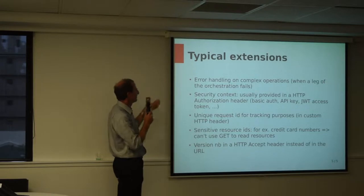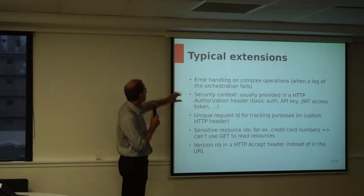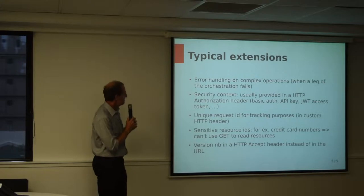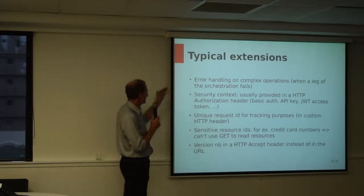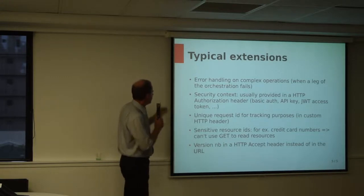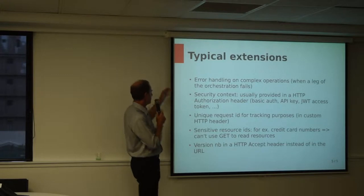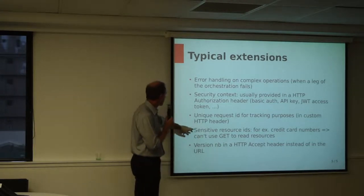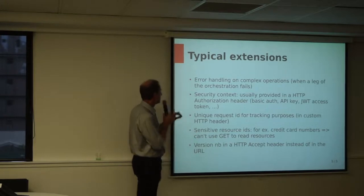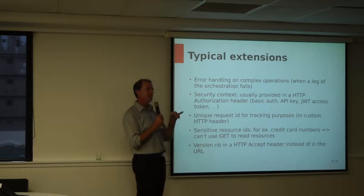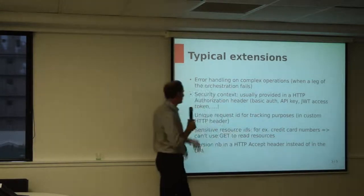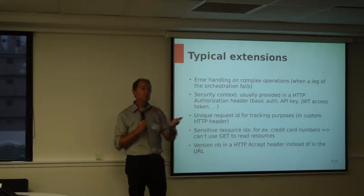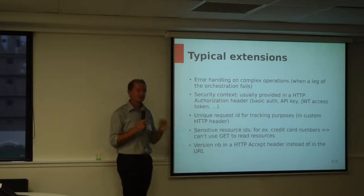Finally, it's worth mentioning what is intentionally NOT included. Error handling on complex operations is not covered — your organization may have a preferred way to handle that. Security is also by design not included in the PayPal API standards. Unique request IDs — the idea of having an ID in your HTTP header to track a request end-to-end across different legs — are also not included. Sensitive resource IDs are another interesting gap: when you don't want a GET request to expose the identifier of your resource — a credit card number being a good example — you don't want a GET endpoint like `/creditcard/{number}` for PCI DSS reasons, and unfortunately there's no good solution to that problem.